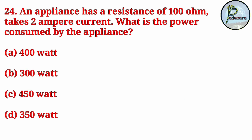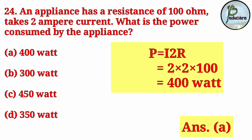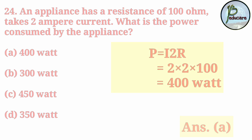Next question: An appliance has a resistance of 100 ohm and takes 2 ampere current. What is the power consumed by the appliance? Using the formula P = I²R: 2² × 100 = 4 × 100 = 400. The correct answer is A, 400 watt.